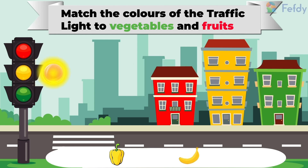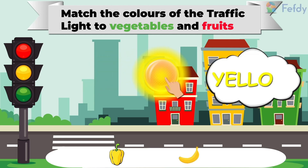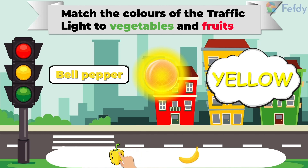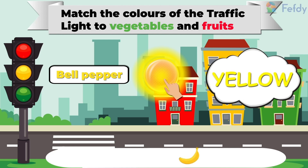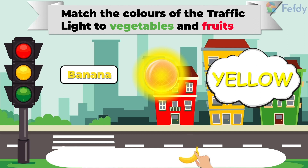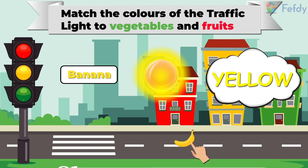Now let's move on to our final color — yellow. Yellow bell pepper. We all know that bananas are yellow in color too. Yellow banana.